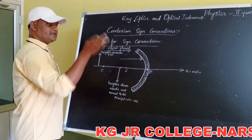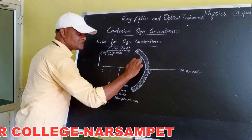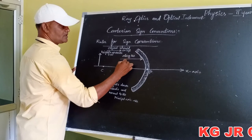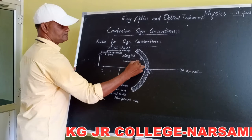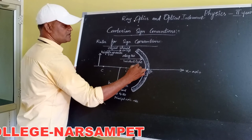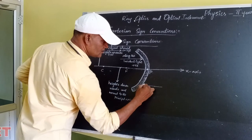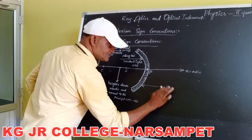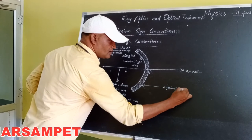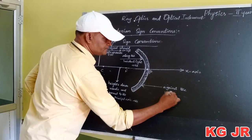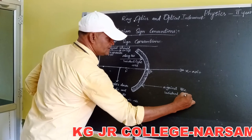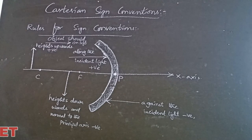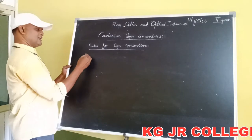This is the incident light. The direction of incident light: when the distances are measured along the direction of incident light, that becomes positive. The distances measured against the incident light become negative. These are the rules for sign conventions.